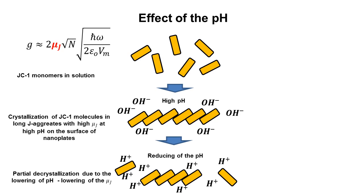Thus, the reduction of the pH of the medium should lead to the opposite process by reducing the amount of hydroxide anions and increasing the amount of hydrogen ions. This shift of the ionic balance may lead to partial decrystallization and a decrease in the size of aggregates, which in turn should lead to a decrease in the exciton delocalization and reduction of the transition dipole moment of the J-band.